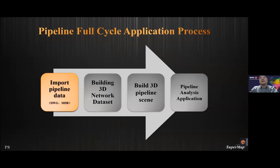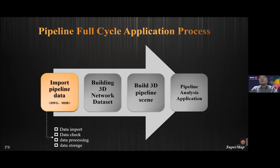Next, let's look at the full circle application process of the pipe network. It can be divided into: import of pipeline data, establishment of 3D network data sets, creating 3D pipe network scenes, and finally pipe network analysis and application. When importing pipeline data, we always import from existing digital data, such as DWG or MDB.